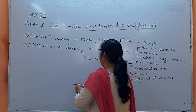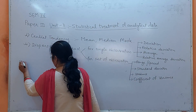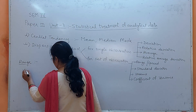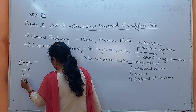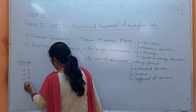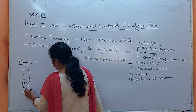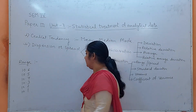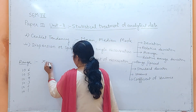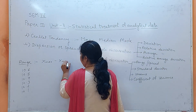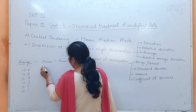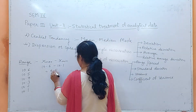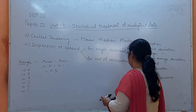Next is range. The difference between the maximum and the minimum of the observations is called range: x_maximum minus x_minimum. For example, 10.6 minus 10.1 gives a range of 0.5. Range is also called spread.